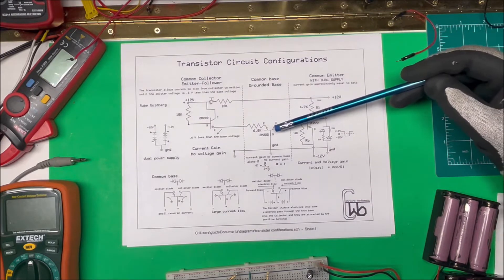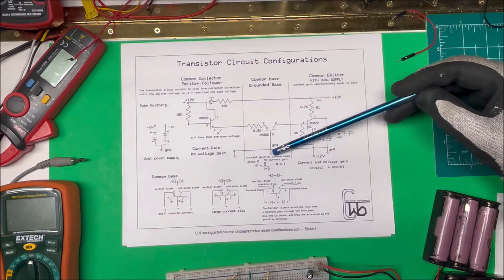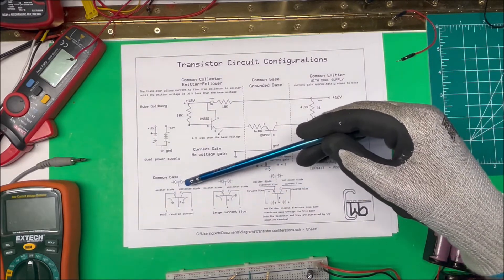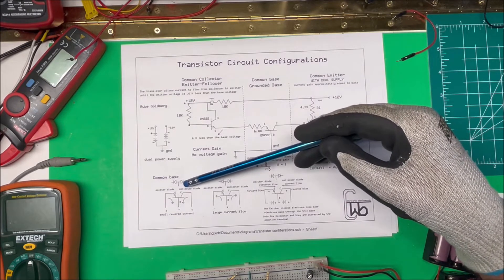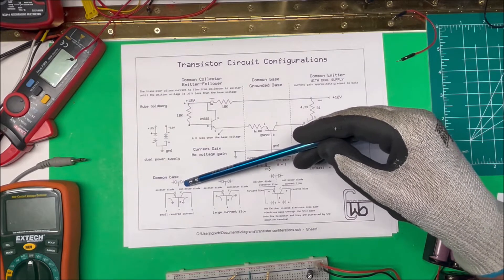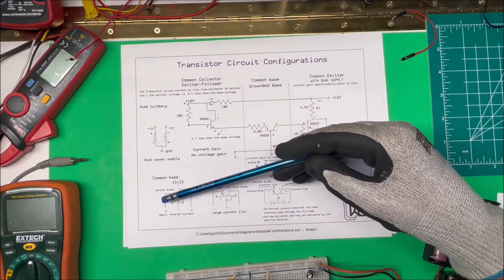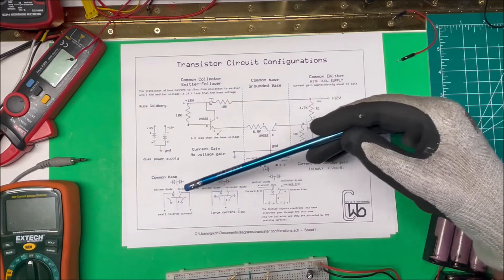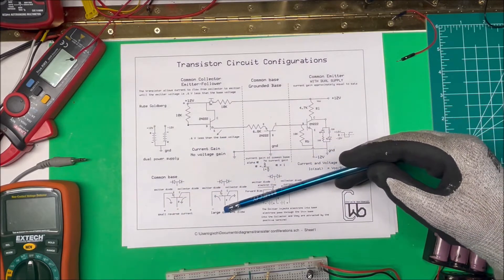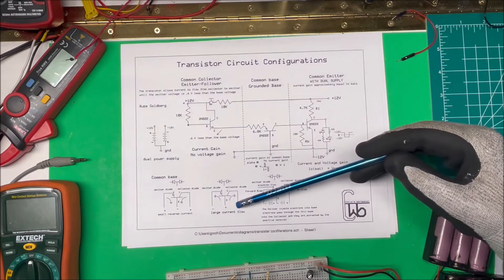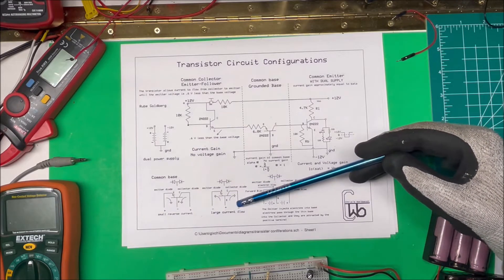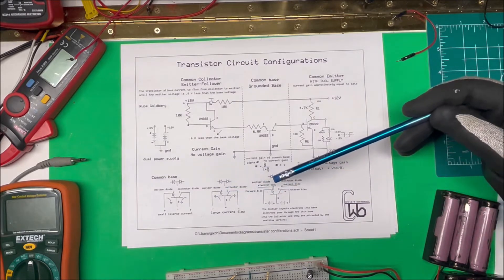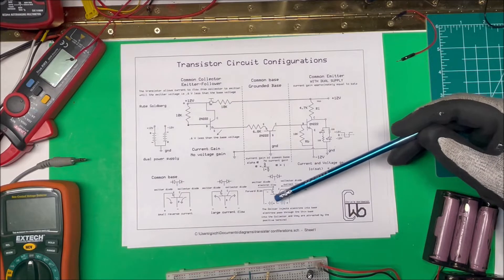Then I come over to this common base or grounded base, where the base is just grounded. On a grounded base, the transistor is basically two back-to-back diodes. If you put a positive on each side and negative in the middle, you just get a little bit of reverse current going through there, nothing's going to happen. And if you put your positive on the base and negative on the collector and emitter, you're going to get current to flow in both directions, but again nothing's going to happen.